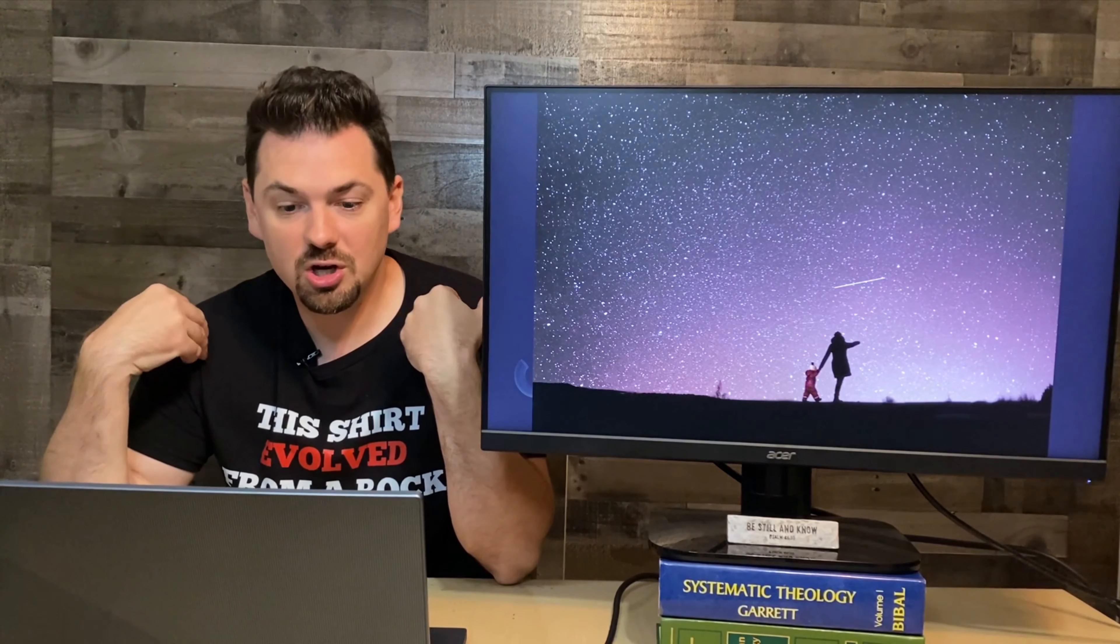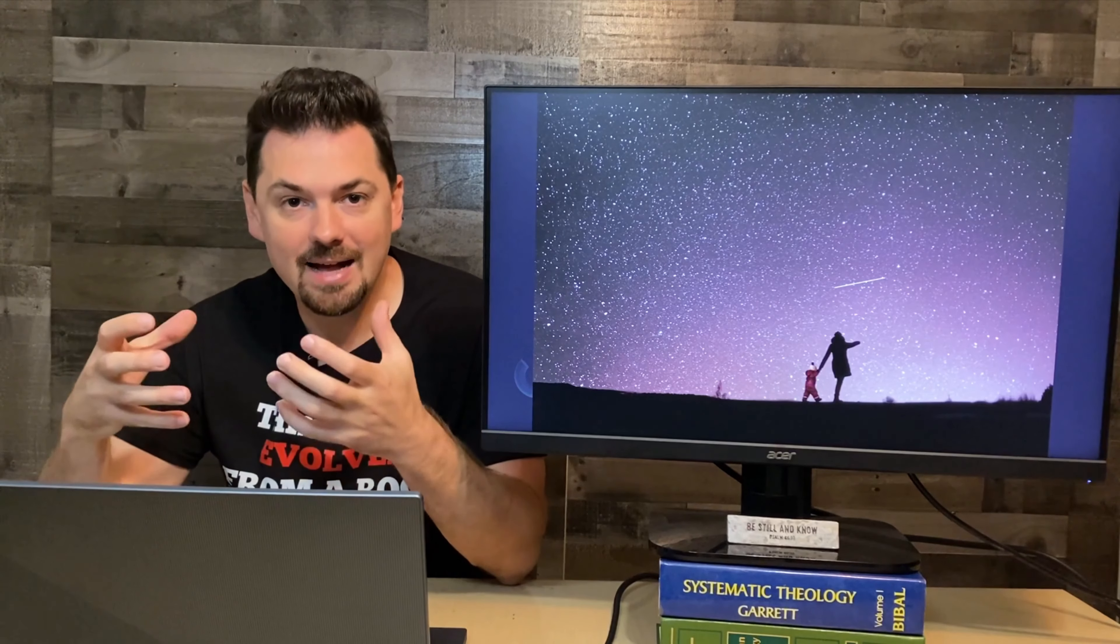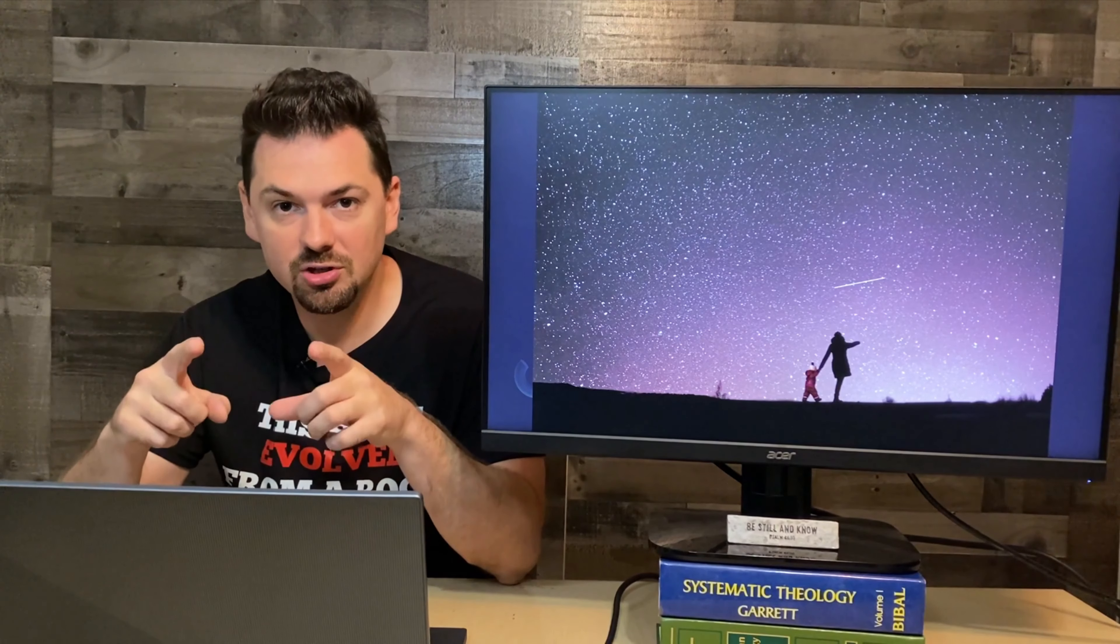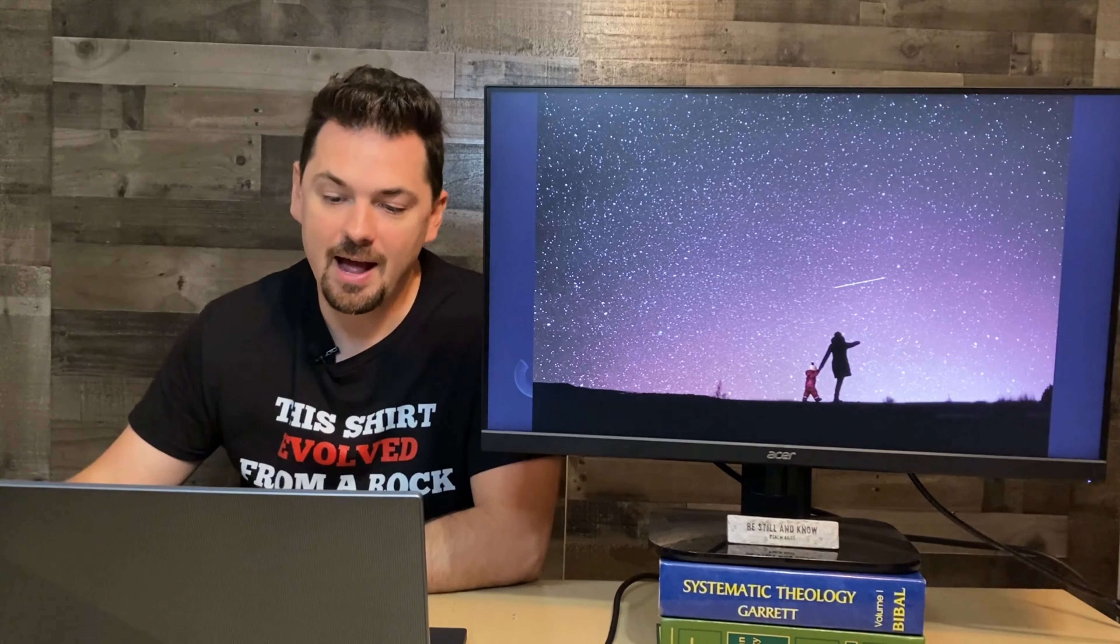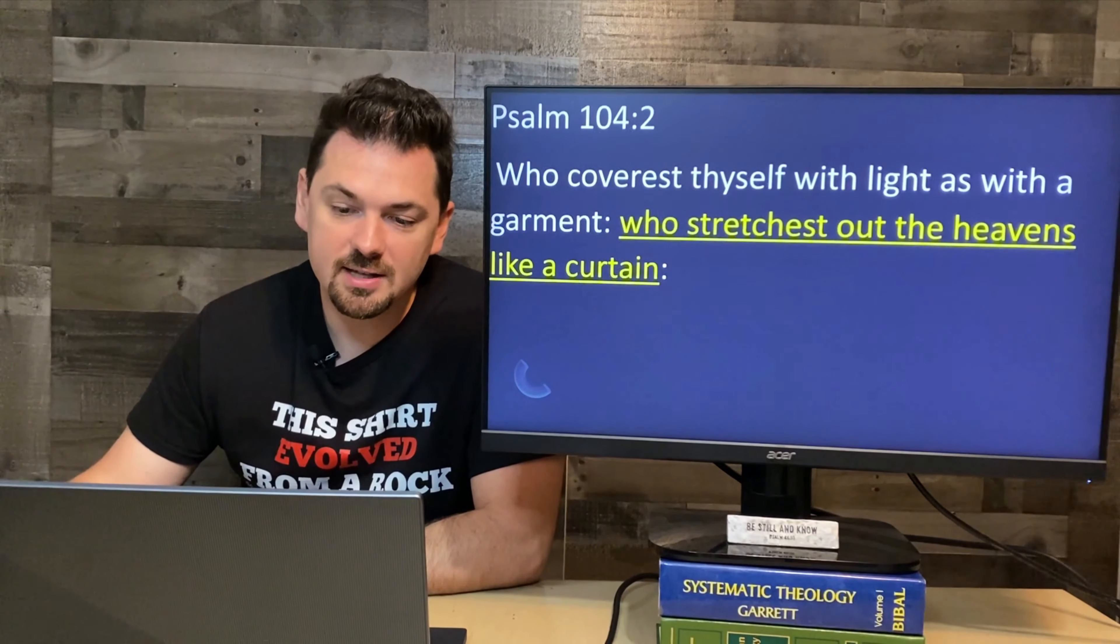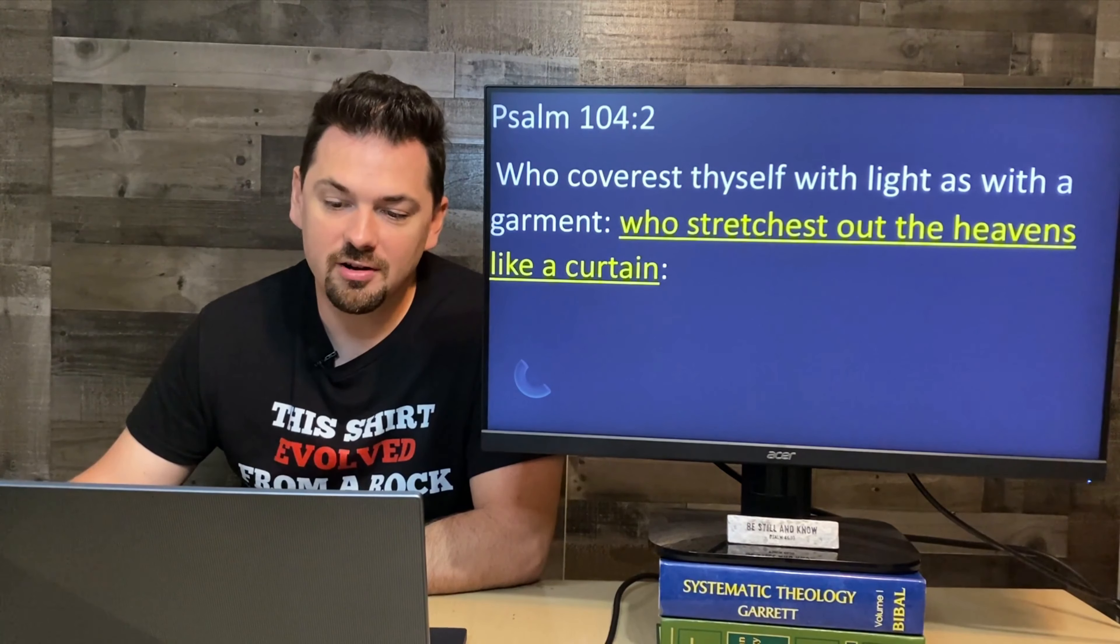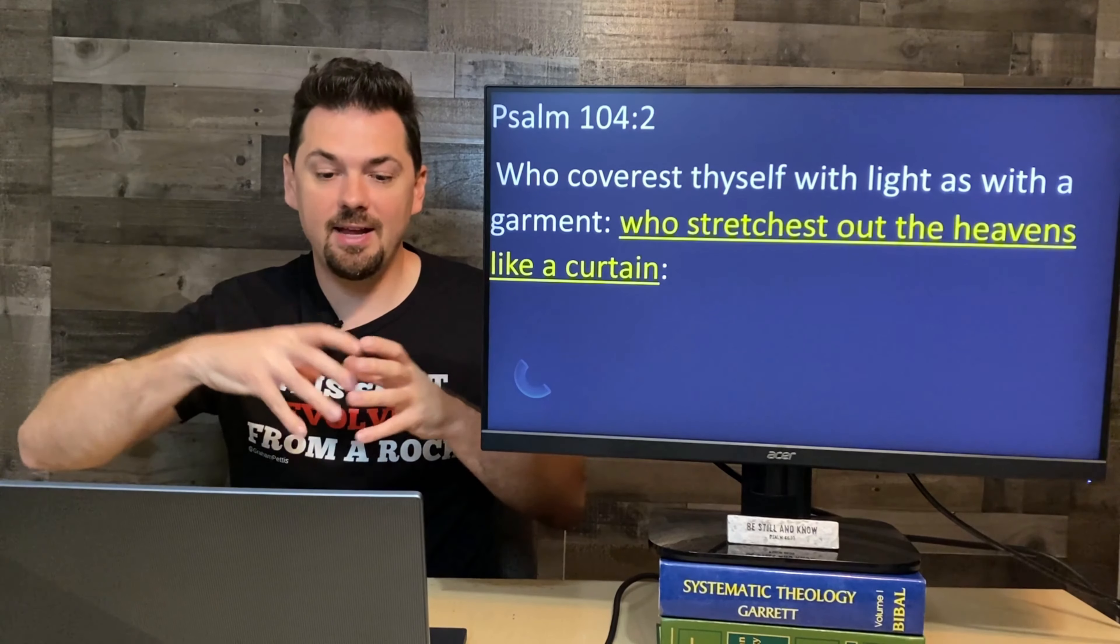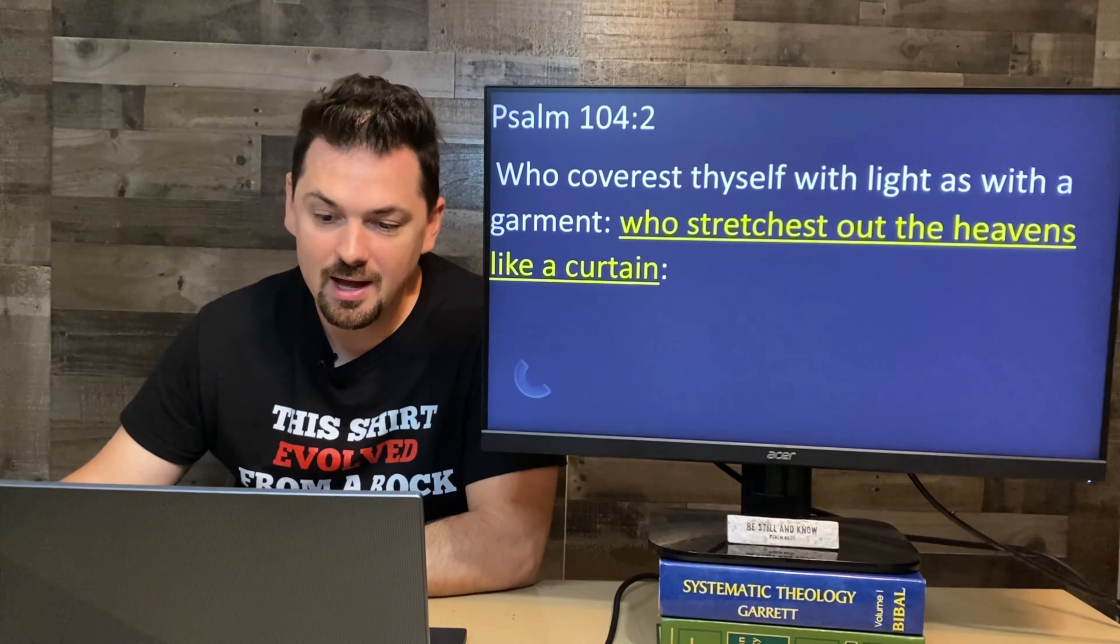We're just so small, but the universe is so massive and expansive. And we are so much more important. But he knows every single star by their name, and he knows your name. Look at this. Who covers thyself with lights as with a garment, who stretches out the heavens like a curtain. And so we talk about light years. When God created everything, he stretched it out. That's what it says he did. I'm going to show you more scriptures here in just a second.